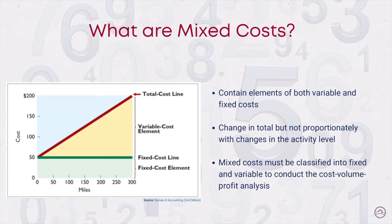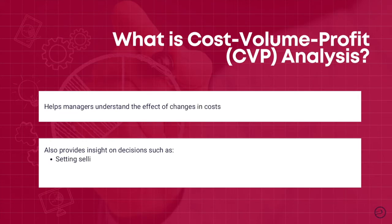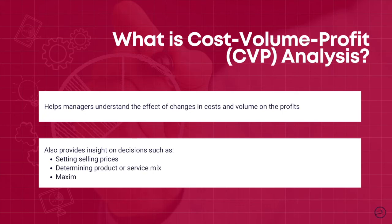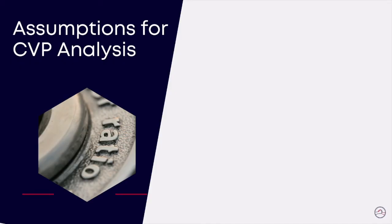So what is a cost-volume-profit analysis? It is a technique that can be used alongside cost-behavior information to help managers prepare useful planning analysis. It deals with how revenue and costs vary with a change in service level. By studying the relationship of costs, service volume, and revenue, managers will be able to make better and informed decisions. When we conduct a cost-volume-profit analysis, we make certain assumptions since we are using this tool as a planning exercise to make future decisions.